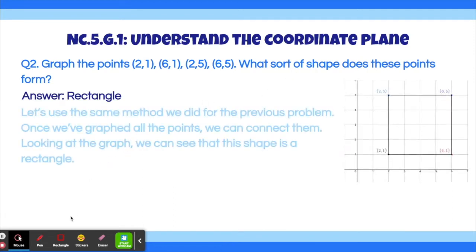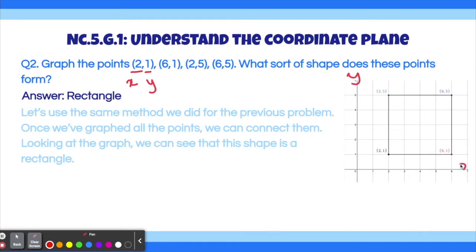Let's use the same method we did for the previous problem. We need to graph all of these points individually. The first number is the x-coordinate and the second number is the y-coordinate — the up-and-down one is the y-axis, and the left-and-right one is the x-axis. For the first point, we go 2 over and 1 up, giving us (2, 1). For the second point, 6 over and 1 up. For the third point, 2 right and 5 up, giving us (2, 5). And for the last point, 6 right and 5 up, giving us (6, 5). Now we connect these four points with lines, and we can see this makes a rectangle.